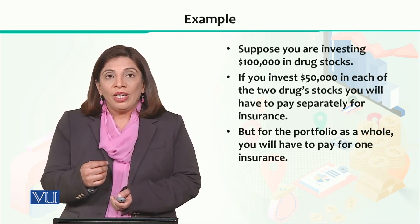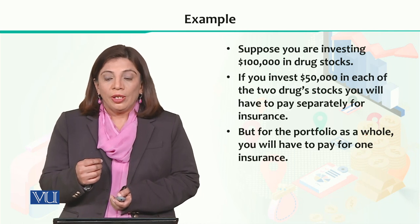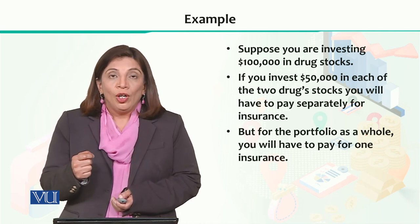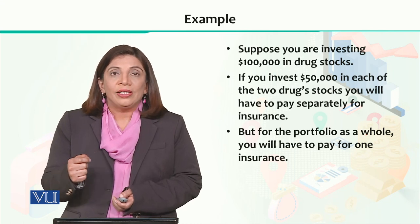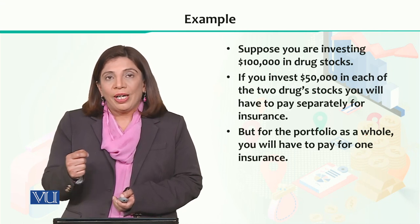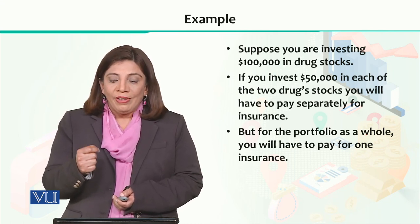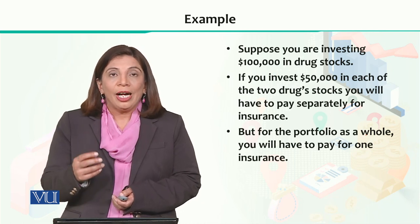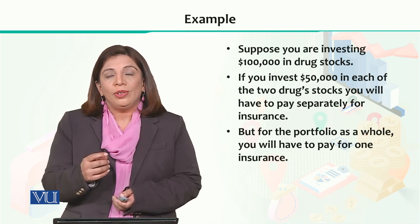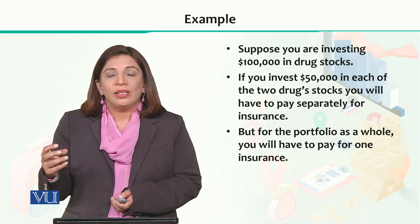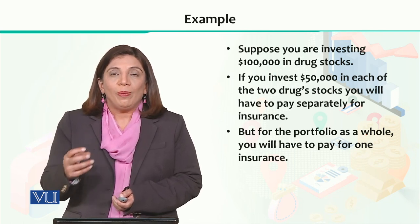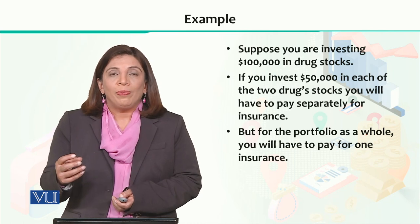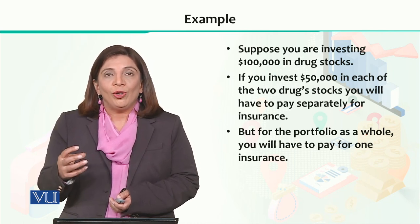Suppose you invest $100,000 in some drug stocks, and you buy two types of drug stocks. You will pay a separate fee for both investments. But if you take a portfolio in which you have multiple types of investment instruments, you have to consider and invest in that portfolio.